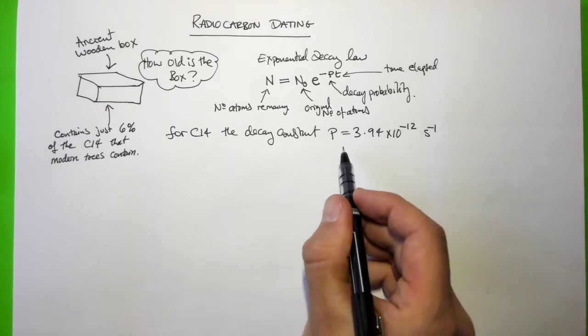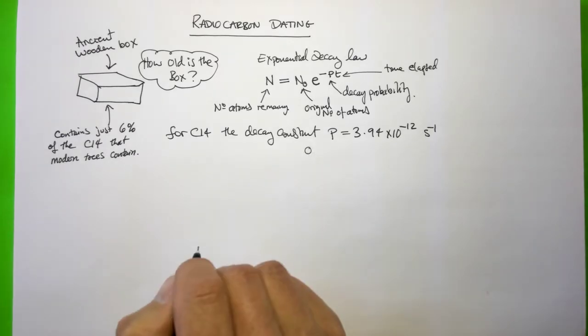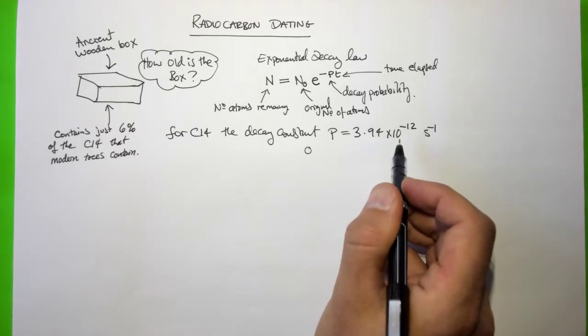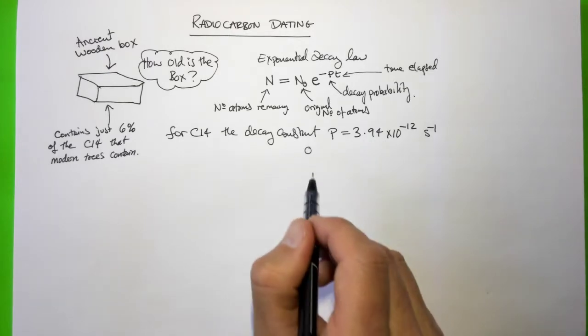So what this means is that if you had one carbon-14 atom sitting on this table, here it is, our imaginary carbon-14 atom, the probability that it would decay in the next second is about 3.94 times 10 to the minus 12. So it's very, very unlikely that this atom will decay.